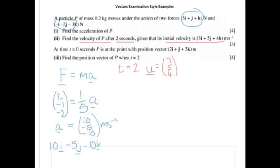And we're asked to find the velocity after two seconds. Now, we've just worked out the acceleration. And so if we want the final velocity, that's v equals u plus at. The final velocity, v, is the initial velocity, we've got 3i, 5j, and 4k, plus two seconds times the acceleration, 10, minus 5, and minus 10.